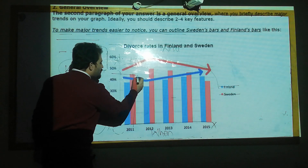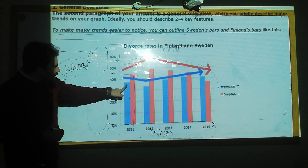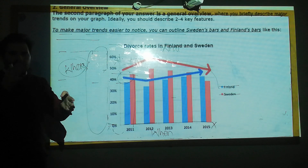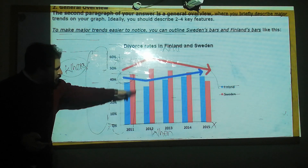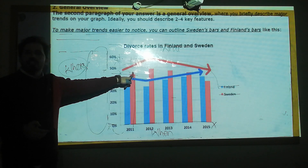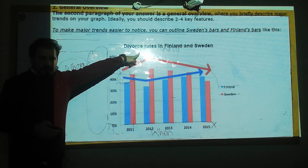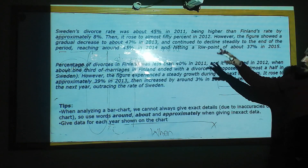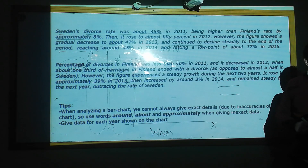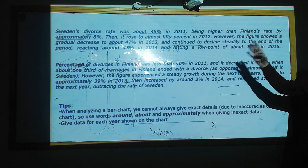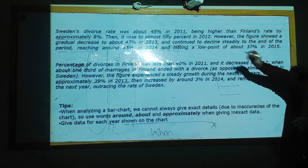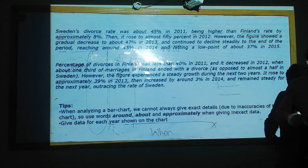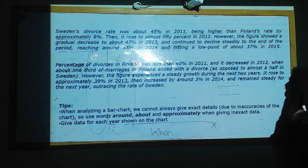Sweden reaches almost 45%, and Finland is lower — almost 37% to 38% — so we can do a comparison: Sweden's divorce rate was about 45% in 2011, being higher than Finland's rate by approximately 8%. Then it rose to almost 50% in 2012.